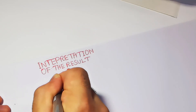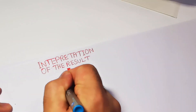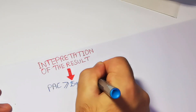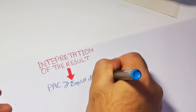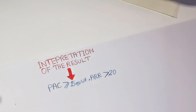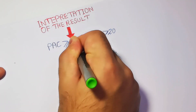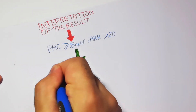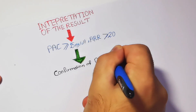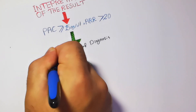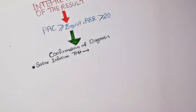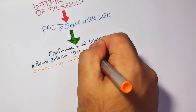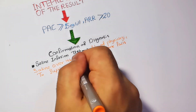If the aldosterone-renin ratio is still elevated — usually greater than 20 — and the plasma aldosterone concentration is also elevated at about 15 nanogram per deciliter, we suspect primary hyperaldosteronism. To confirm the diagnosis, we perform the saline infusion test: two liters of physiological saline are given to the patient intravenously over four hours. If aldosterone fails to suppress to less than 10 nanogram per deciliter, the diagnosis of primary hyperaldosteronism is confirmed.